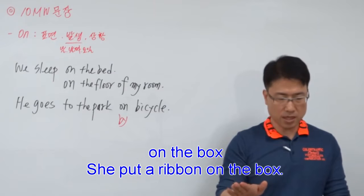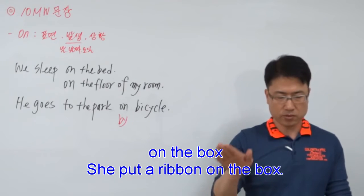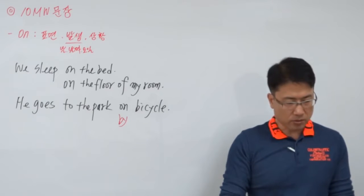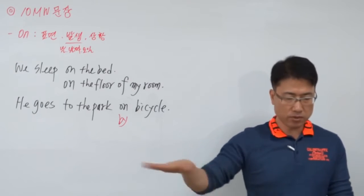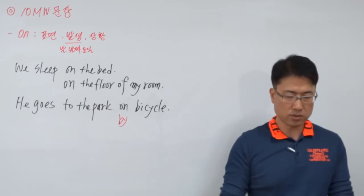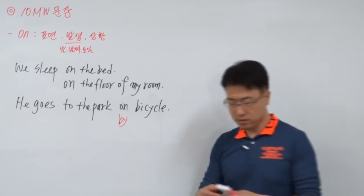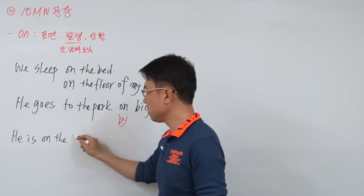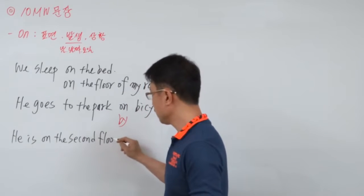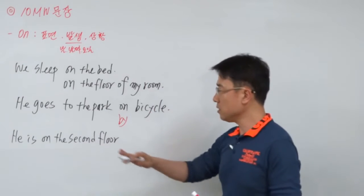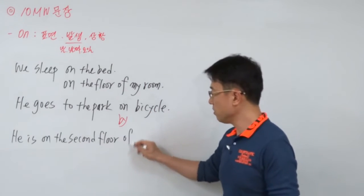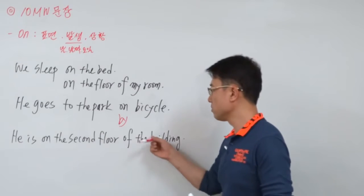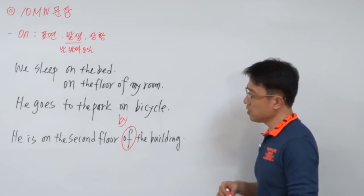On the box — 표면인데 박스 표면이다. 그녀가 두었다. 둔 게 리본이고 리본은 표면에 있고 표면은 박스 표면이다라고 이해하시면 되겠습니다. 그 다음에 on the second floor — 표면인데 2층 표면이다. Floor는 넓은 면이니까 on을 쓰는 게 맞죠. He is on the second floor — 그가 2층 표면에 있다 그런 얘기죠.